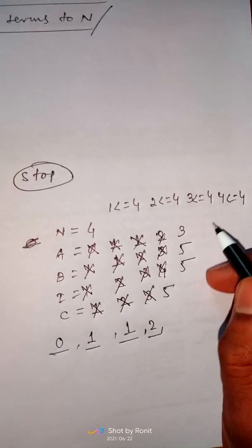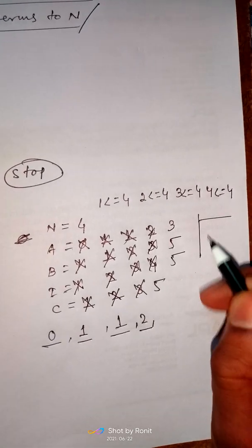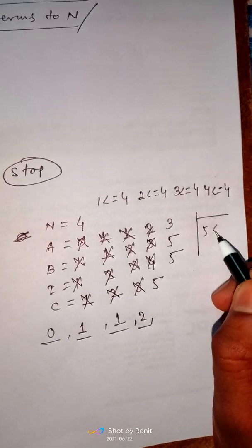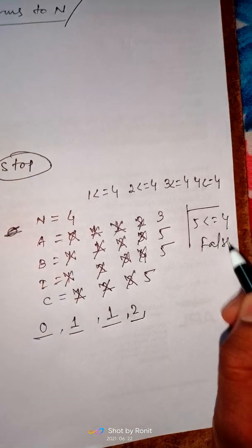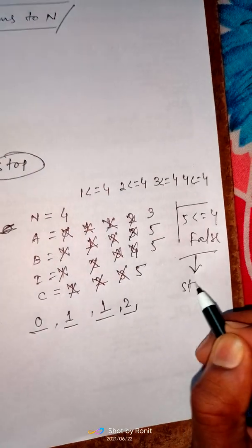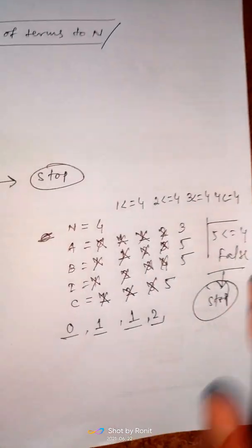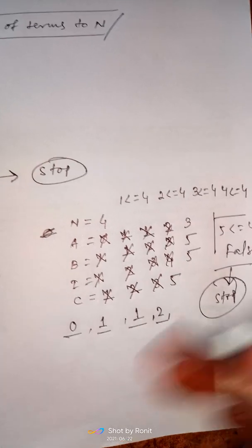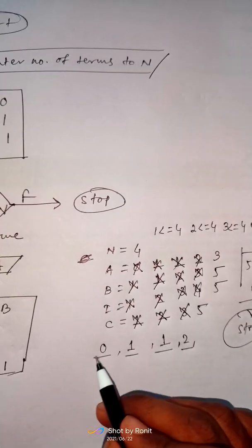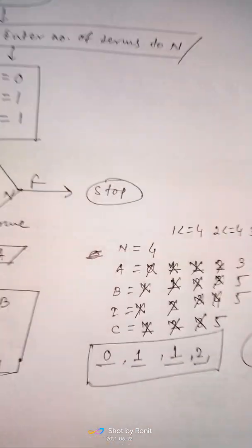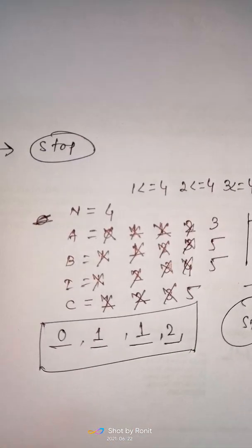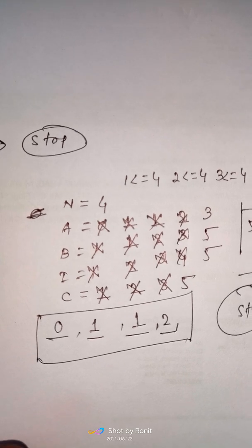Now we check the condition: 5 ≤ 4 — that is false, so the loop will be stopped. Our Fibonacci series up to the fourth term is: 0, 1, 1, 2.